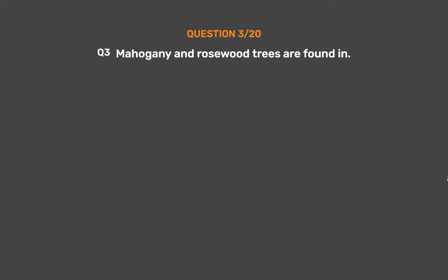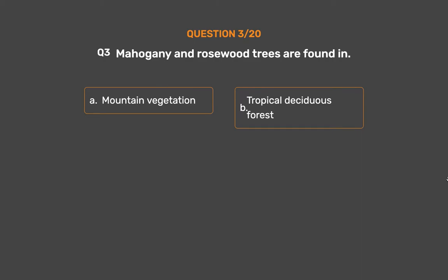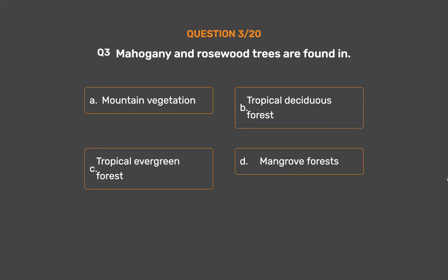Question No. 3: Mahogany and rosewood trees are found in — Option A: Mountain vegetation, Option B: Tropical deciduous forest, Option C: Tropical evergreen forest, Option D: Mangrove forests.